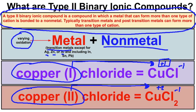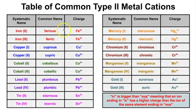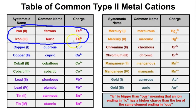Before we start writing chemical formulas and naming them, we need to look at some common type 2 metal cations. I recommend pausing the video here to familiarize yourself with them. For example, iron can form two types of ions: positive 2 or positive 3. The systematic name for the iron ion with a 2+ charge is iron 2, with the Roman numeral in parentheses indicating the charge.